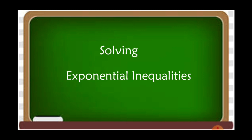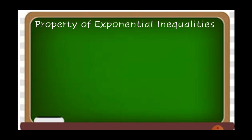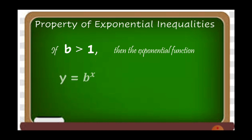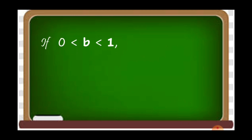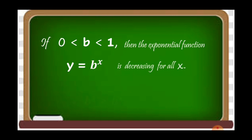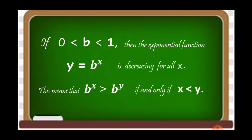Now, how to solve exponential inequalities? First, let us know the property of exponential inequalities. If b is greater than 1, then the exponential function y = b^x is increasing for all x. This means b^x is less than b^y if and only if x is less than y. If the base is greater than 0 but less than 1, then the exponential function y = b^x is decreasing for all x. This means b^x is greater than b^y if and only if x is less than y.